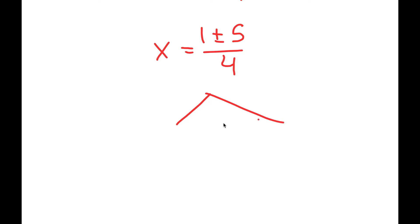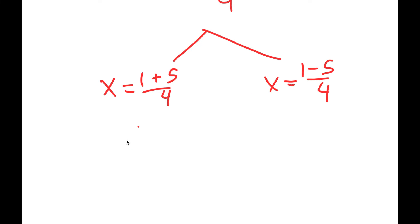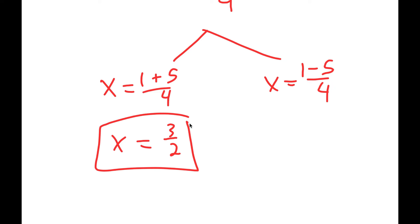Now this gives me two solutions. I get x equals 1 plus 5 over 4, and x equals 1 minus 5 over 4. For x equals 1 plus 5 over 4, I get x equals 3 over 2. And for x equals 1 minus 5 over 4, I get x equals negative 4 over 4, which is negative 1.